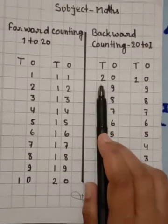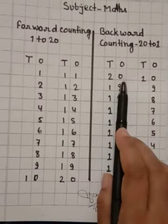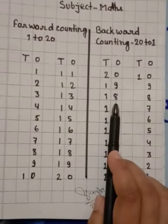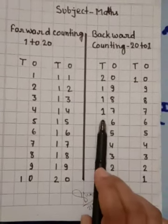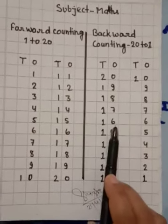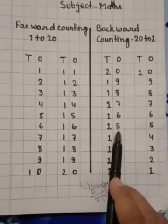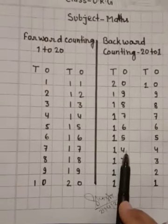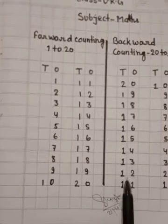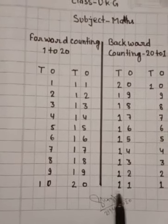Now write the numbers. 20, 19, 18, 17, 16, 15, 14, 13, 12, 11.